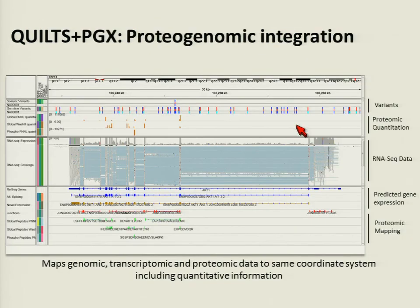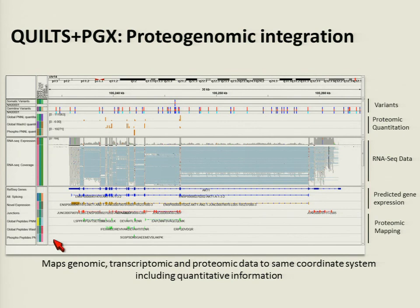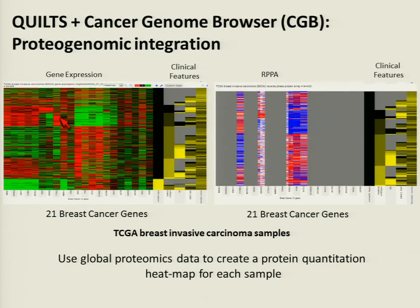In addition to mapping all peptides on the genome, we can incorporate proteome quantitation levels, RNA-seq quantitation, and expression coverage. We are also adding phosphorylated peptides, making this a comprehensive view of all the information at once. We will also look at all 95 tumors as a heat map in terms of their proteomic expression, similar to the cancer genome browser which already has TCGA analysis uploaded.